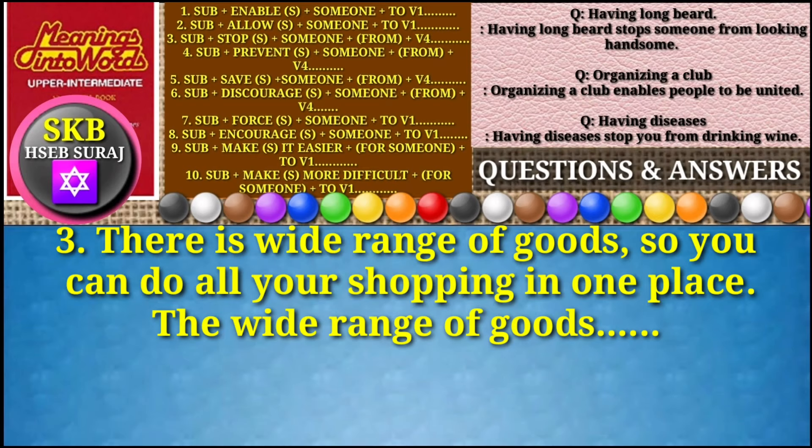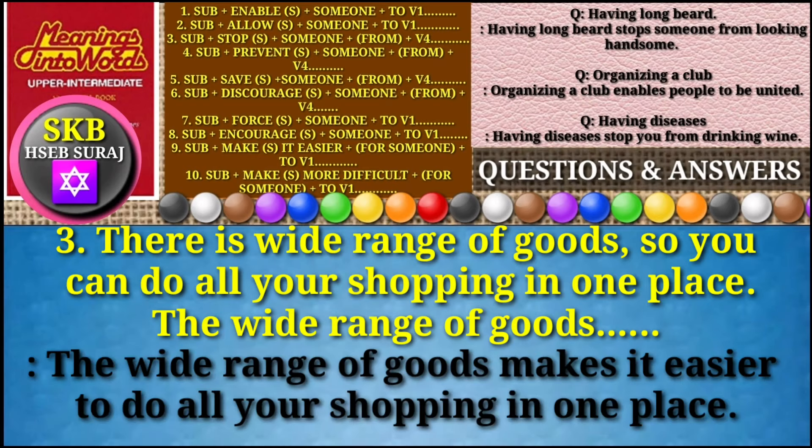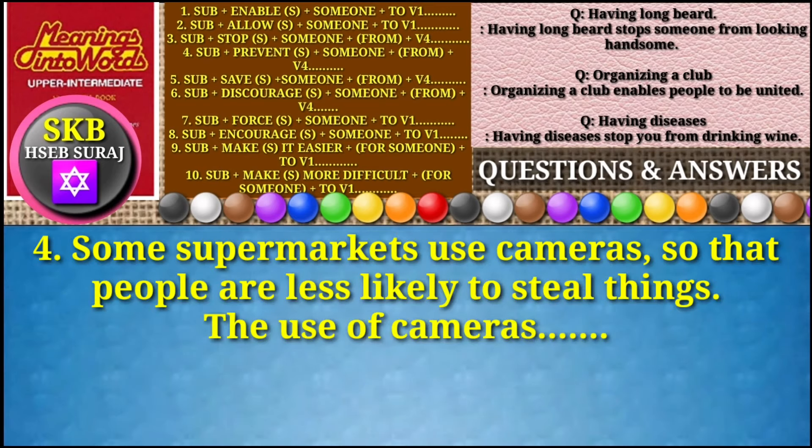Question number three: 'There is a wide range of goods so you can do all your shopping in one place.' Start your answer with 'the wide range of goods.' Answer: The wide range of goods makes it easier to do all your shopping in one place.